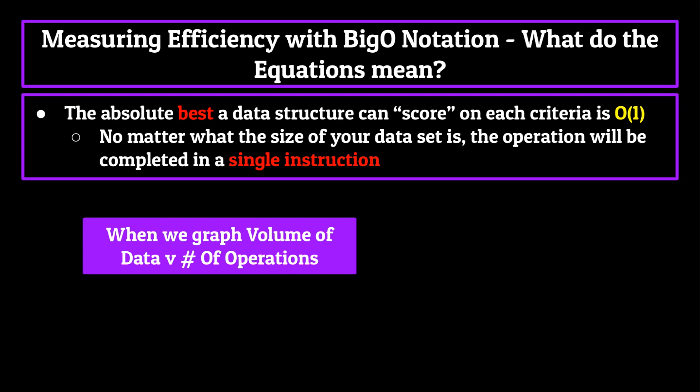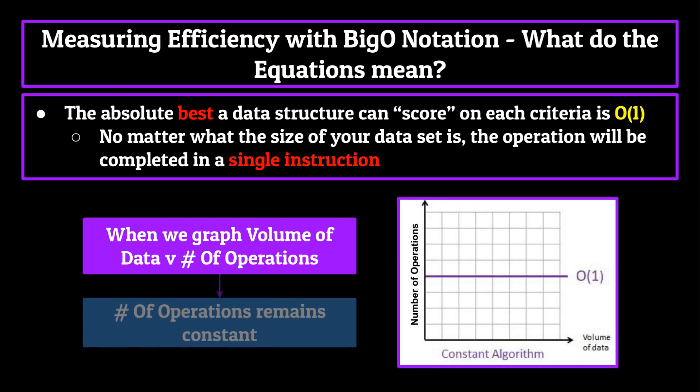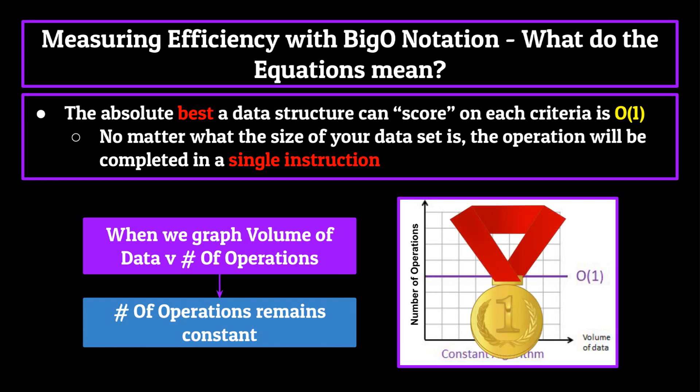This is why when we look at a graph of volume of data versus instructions required, the line remains constant at one. No matter the volume of data being used, the computer can complete that task in a single instruction, whether it be accessing, searching, inserting, or deleting an element from the data structure. O of 1 is the gold standard, absolute best, top of its class efficiency equation. It is basically the Michael Jordan when it comes to time complexity equations.